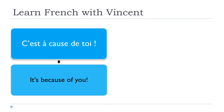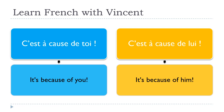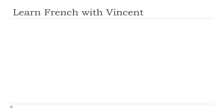Classic sentence: « C'est à cause de toi » — it's because of you. « C'est à cause de lui » — it's because of him. So we can see that with « à cause de », you will have a pronoun after. Like in English, 'you' in French is « toi », and 'him' in French is « lui ».